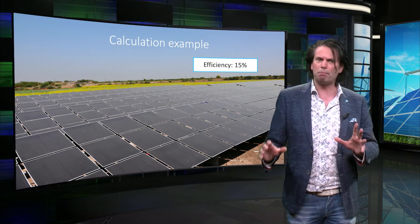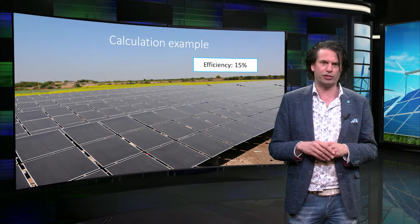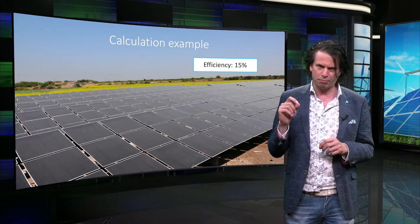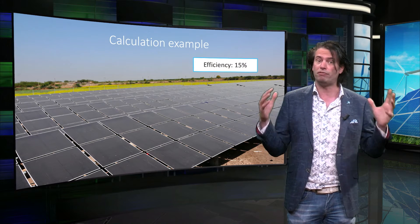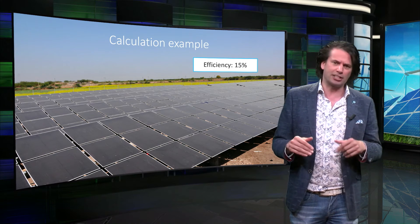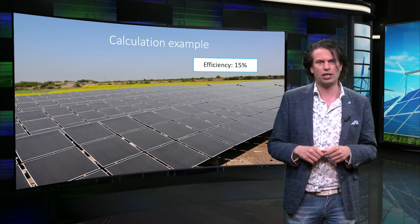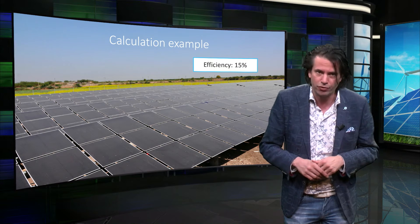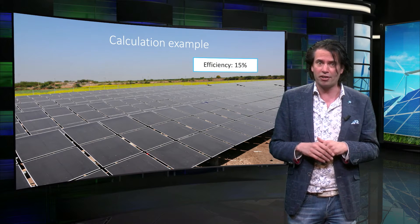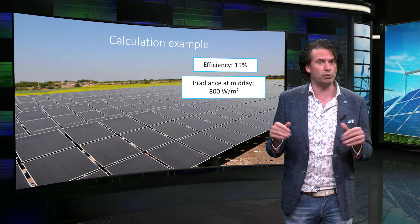For a working PV system, some other components are also required, which influences the output efficiency of the entire system. For this example, we will take a moderate estimation of 15% for the total PV system efficiency. The power in sunlight is expressed as watts per square meter and called solar irradiance. Using data from the NASA website for meteorology, the monthly average midday solar irradiance for May in Gujarat is approximately 800 watts per square meter.